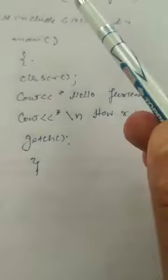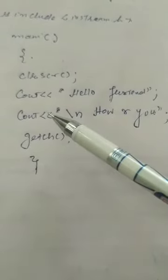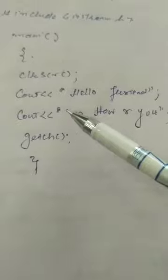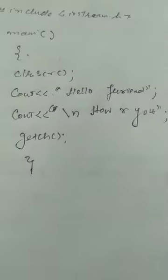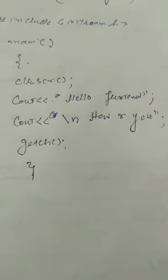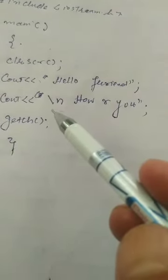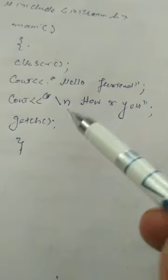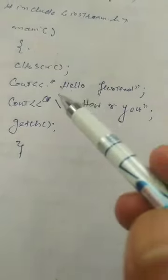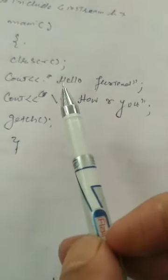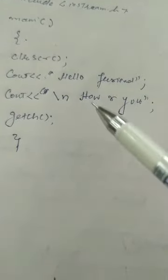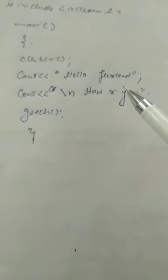Then we have to write the next line, so we use cout again with the same format: cout followed by less-than signs, then inside inverted commas we write \n followed by 'How are you'. The \n means newline — it moves the cursor to the second line so that both lines are printed on two different lines on the output screen.